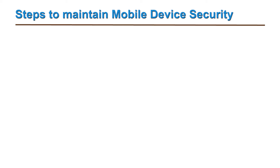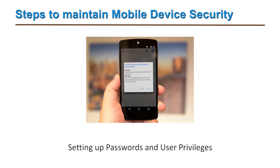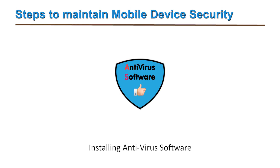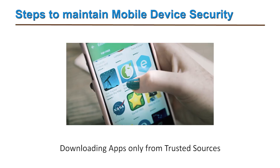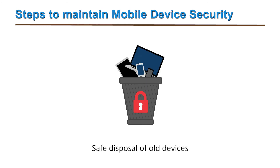The seven steps are: first, locking the phone screen; second, setting up passwords and user privileges; third, using secured networks; fourth, installing antivirus software; fifth, downloading apps only from trusted sources; sixth, keeping apps and device software up to date; and seventh, safe disposal of old or unused mobile devices.